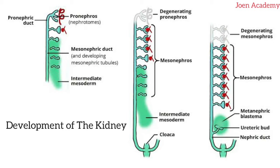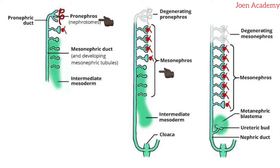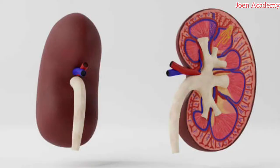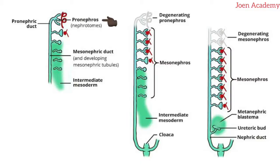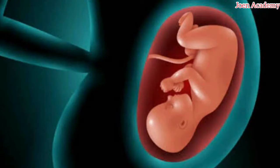It is important we know that the kidney develops from three structures, which are the pronephros, the mesonephros, and the metanephros, which finally becomes the permanent kidney in human beings. The pronephros changes from one form to another, that is to say that they are transitional. It is actually a non-functional structure that develops early in the fourth week of the intra-uterine life, that is life within the uterine.